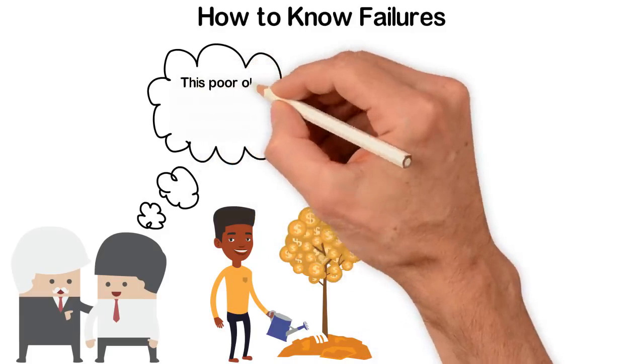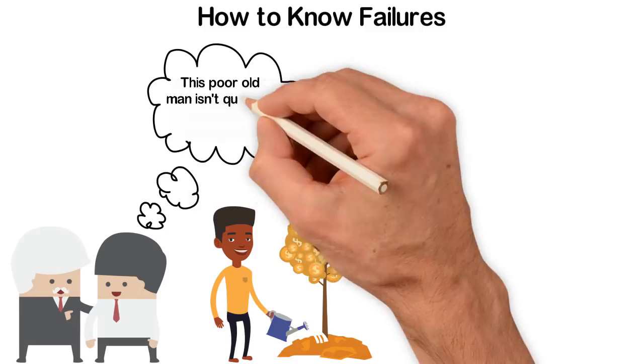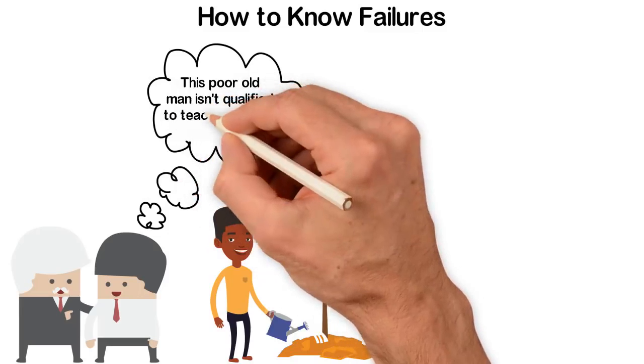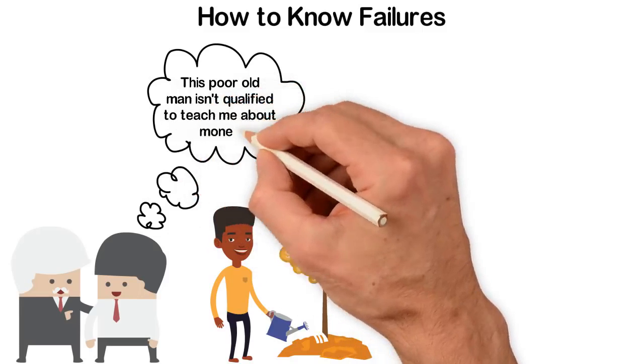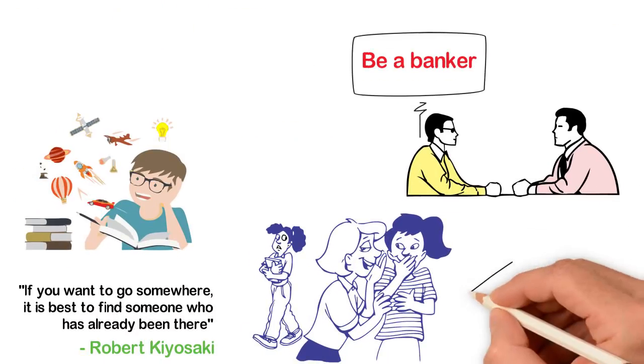So, the very first sign to know who not to take advice from is by identifying those who don't have what you want for your life and exclude them from your list of advisors. Second are the negative people.